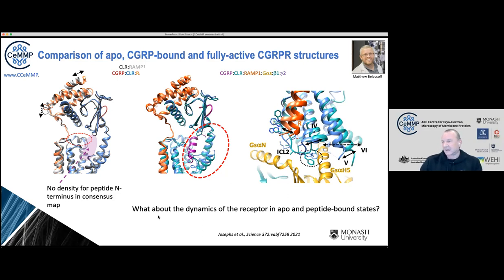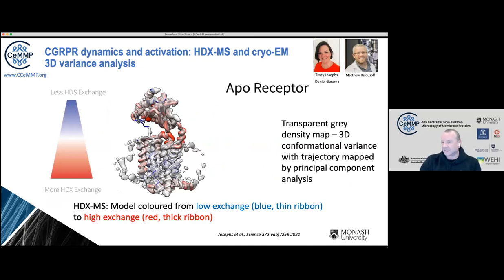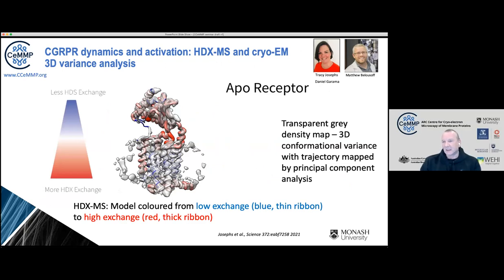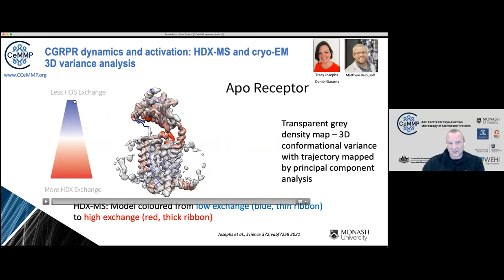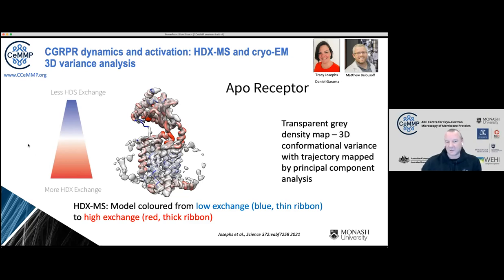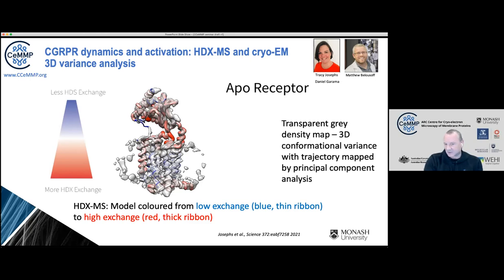To address gaps in understanding how we go from peptide engagement to a state that can engage G-proteins, we looked at dynamics of the receptor in the apo and peptide-bound states in two ways: using 3D variability analysis from the cryo-EM data, work done by Matt Balasov, and in parallel hydrogen-deuterium exchange mass spectrometry, work led by Tracy Josephs in collaboration with Dengarama. What I've done here is plot both datasets into a single movie — HDX shown as blue and thin for low exchange and thick and red for high exchange, overlaid with the EM density in transparent surface representation running from one end of a trajectory to another.